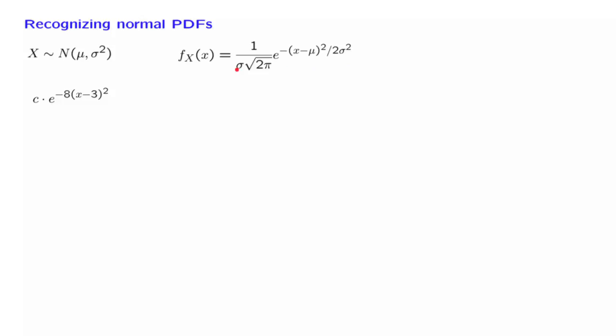provided that you make the identification that 3 is equal to mu. So this is a normal PDF with a mean equal to 3,